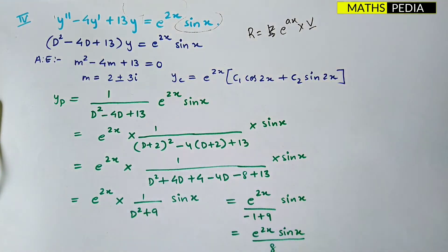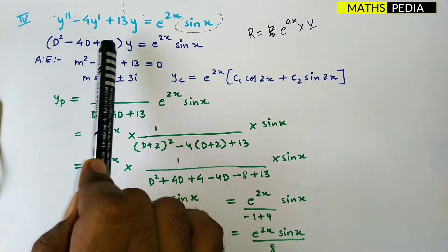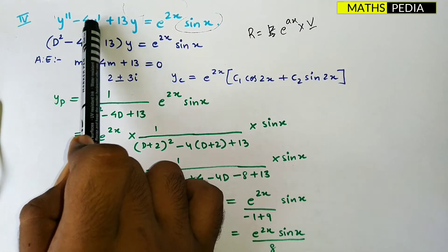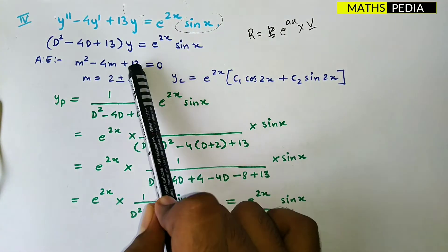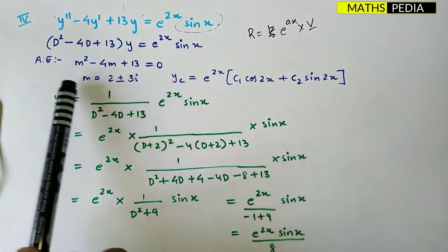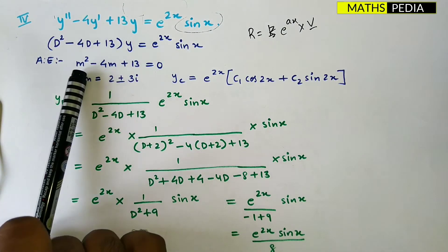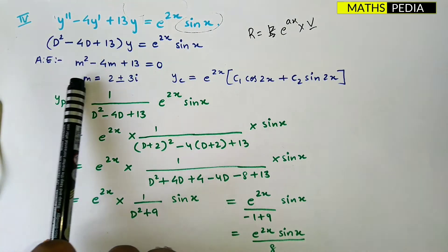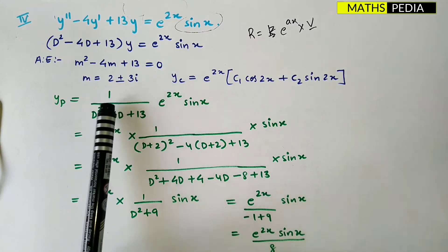Now we'll go for the LHS first. We have to solve by the same method. y double dash will be D² into y, y dash will be D into y, then 13y, so we take y outside. Then we write the auxiliary equation — replace D with m — and we find the m roots by calculator or by splitting the middle term.